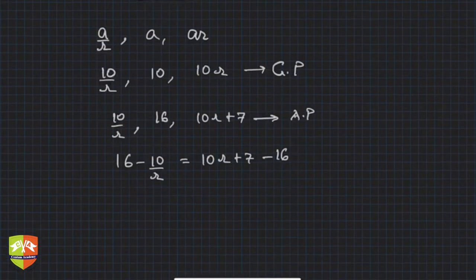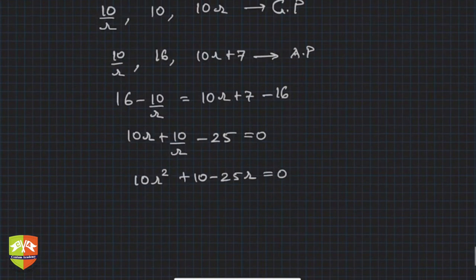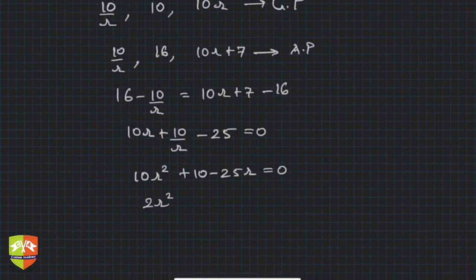Hence what will you get? You will get 10r + 10/r, and here 7 - 16 is -9, so -25. This is the equation. Multiply by r the whole equation, you will get 10r² + 10 - 25r = 0. Divide by 5, you will get 2r² + 2 - 5r = 0.